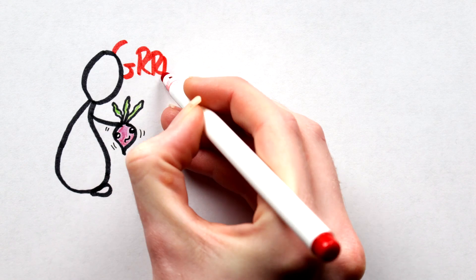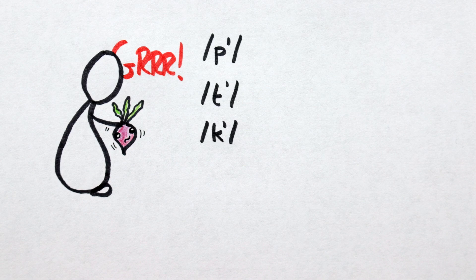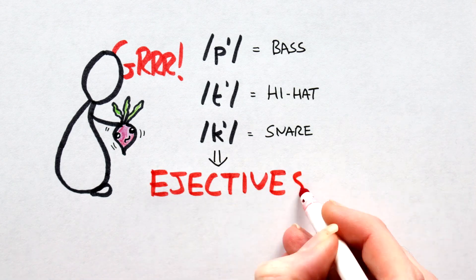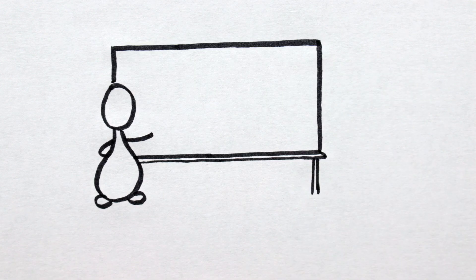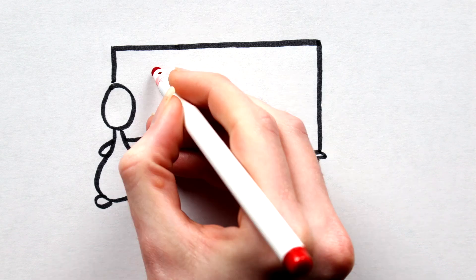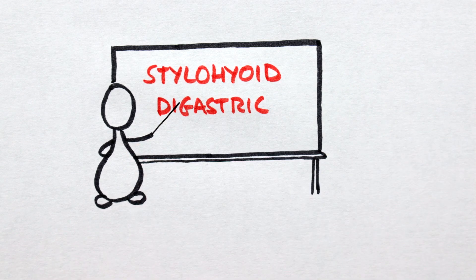Beatboxing, the art of physically assaulting vegetables at its core utilizes three unique sounds. Beatboxers call these the bass, hi-hat and snare sounds. Linguists, however, call them ejectives. I'm not going to go into the sound production mechanics here because it's super dry and super boring and would involve me using words like stylohyoid and digastric. Words that are entirely too nerdy, even for me.